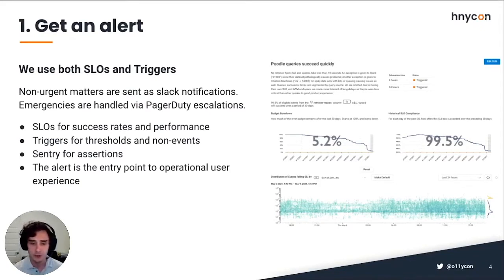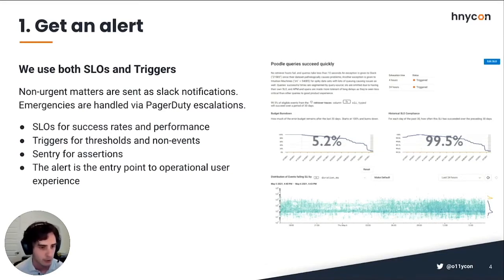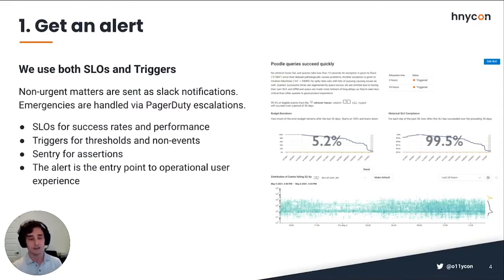Triggers we use for different types of alerting, usually thresholds. For example, if you have 500 database connections and you're at 400, you want to know before you reach the limit where everything decompensates and breaks violently. SLOs aren't great for that — you want to know before there's a problem. Triggers are great for that. A non-event is another case: if you stop receiving traffic, an SLO looking for successful queries won't tell you that traffic has stopped.